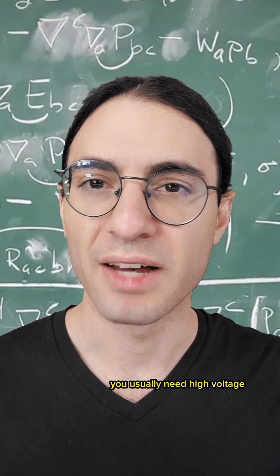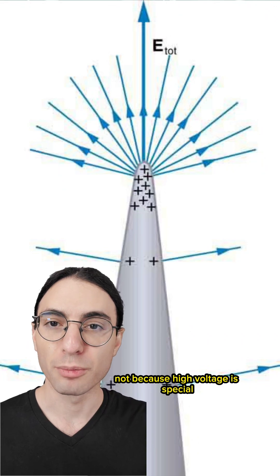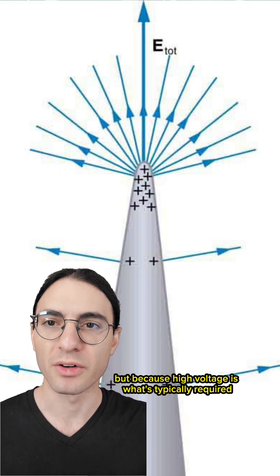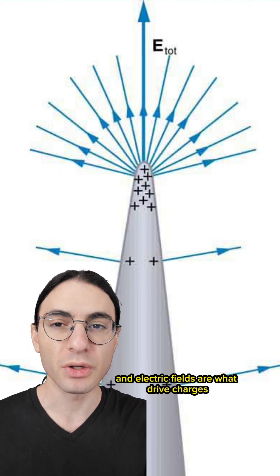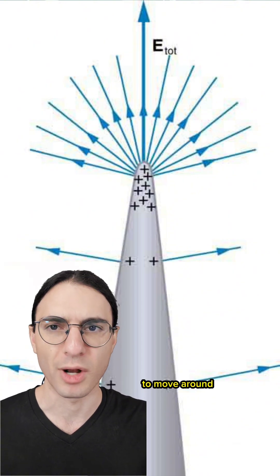Before an electrical arc can form, you usually need high voltage. Not because high voltage is special, but because high voltage is what's typically required for large electric fields, and electric fields are what drive charges, like electrons and positive ions, to move around.